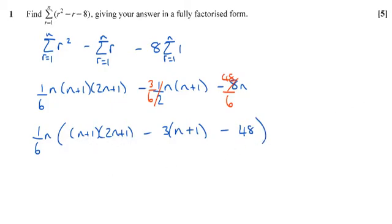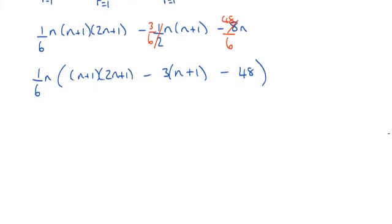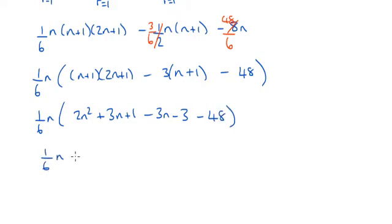So next job, I'm going to expand these brackets. And this is going to become two n squared plus three n plus one. We've got take three n and take three here and take 48. So that is going to become a sixth n. We've then got two n squared. The three n's cancel. So we've got minus 50.